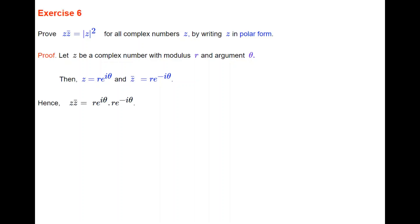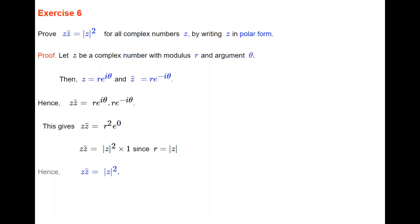The product of Z and its conjugate is R·e^(iθ) times R·e^(−iθ). The right-hand side becomes R²·e^0, because when you multiply terms in index form with the same base you add the indices, and iθ + (−iθ) = 0. Since e^0 = 1 and R is the modulus of Z, the right-hand side is |Z|² × 1 = |Z|². So Z times the conjugate of Z equals the modulus of Z squared.